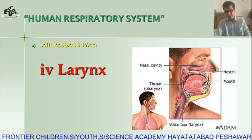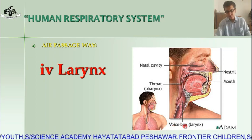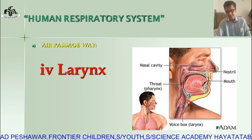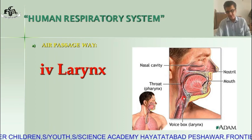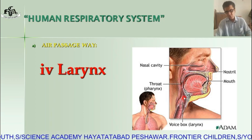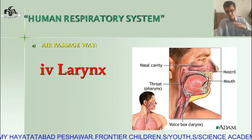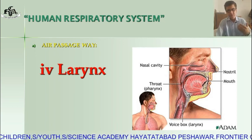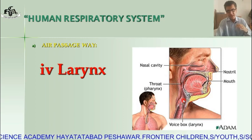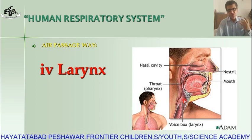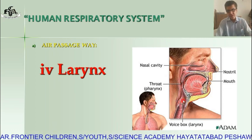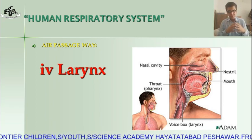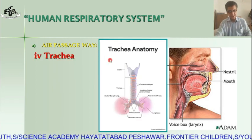The larynx is sometimes also called the voice box or sound box. The reason is that in the upper part of the larynx there are flap-like strings. When air enters in and out, it produces vibration, and from that vibration sound is produced. So the sound is produced in the larynx, which is why it is sometimes also called the voice box or sound box.